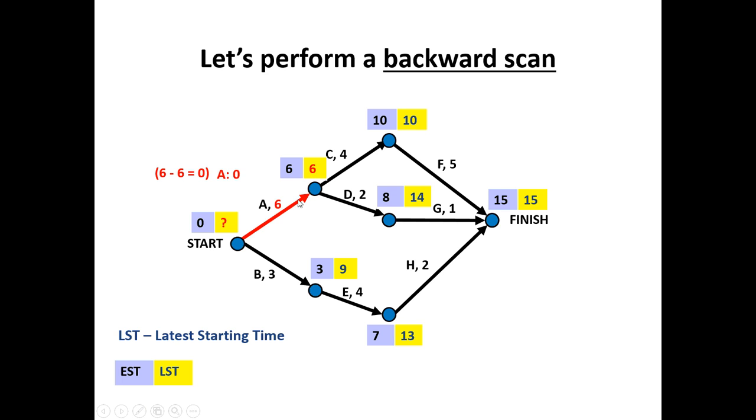Last couple, we've got six minus six gives me zero if I take activity A, scanning backwards. But also I have activity B to consider. And it has a nine, take three, would give me six. Take the smaller of the option, which is zero. So we now have completed a forward and a backwards scan.